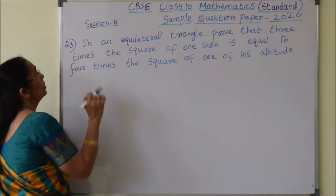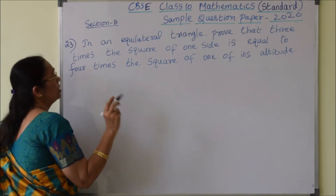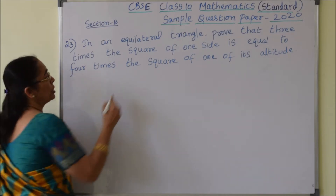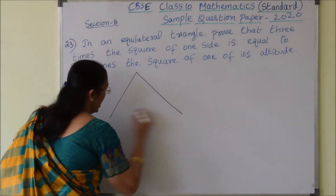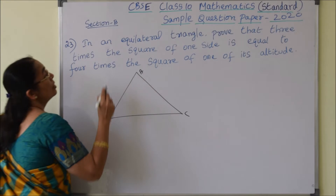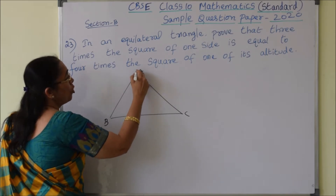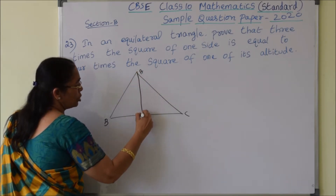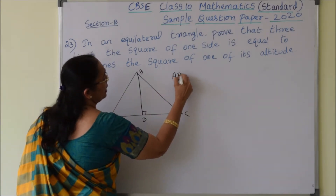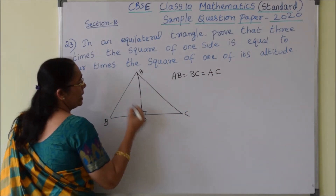23rd optional question: In an equilateral triangle, prove that three times the square of one side is equal to four times the square of one of its altitudes. Let ABC be an equilateral triangle. We have to prove that three times the square of one side equals four times the square of the altitude. So AD is the altitude. Since ABC is equilateral, AB equals BC equals AC, and AD is the altitude.